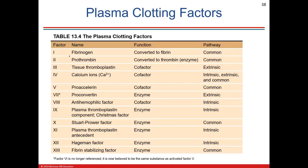Here are all your clotting factors — you don't have to know all of them. The key area is between prothrombin and fibrinogen. Calcium and phospholipids from platelets convert prothrombin to thrombin, which converts fibrinogen to fibrin. Thrombin is another clotting factor that acts as an enzyme.